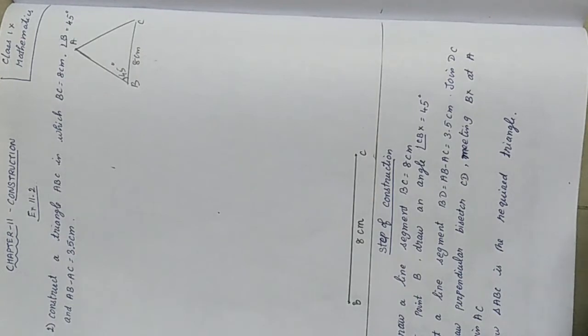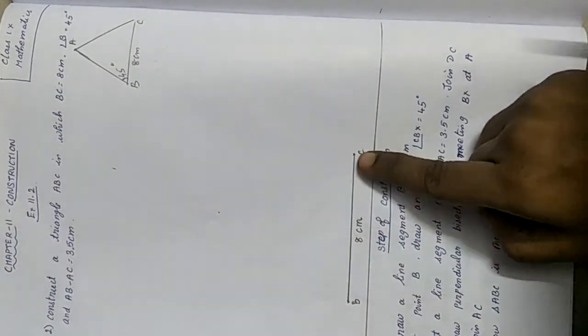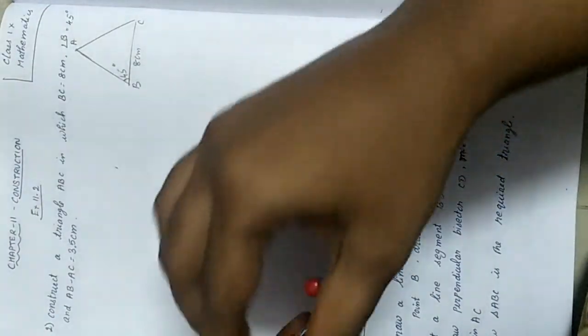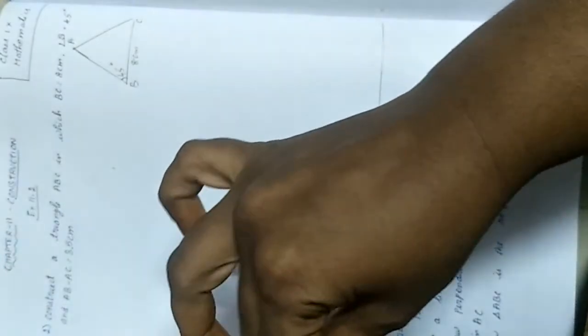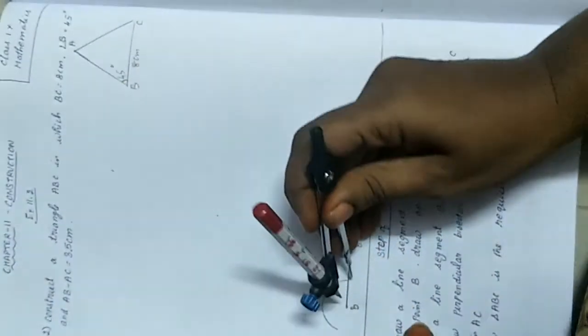The construction is going to be same as we did it in the previous sum. I have drawn a line segment BC which is 8 cm. Now we are going to construct 45 degrees, for that again we have to construct 90 degrees and bisect that 90 degrees.